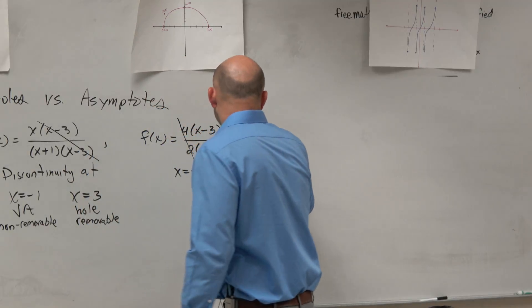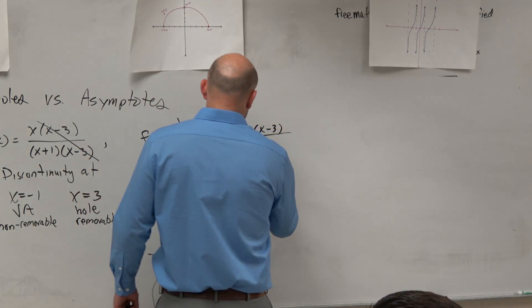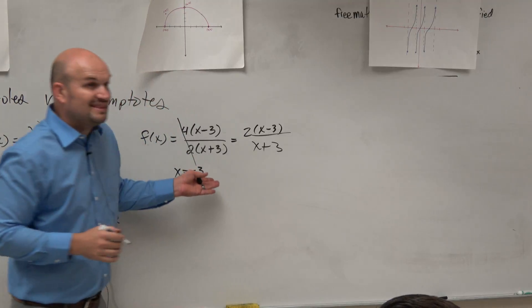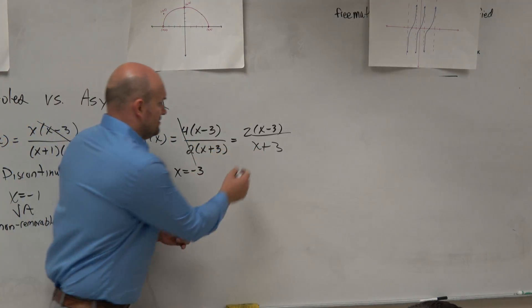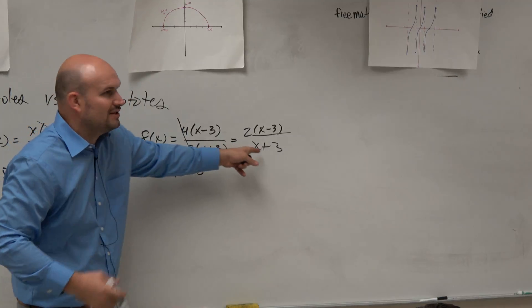So we can simplify this to 2 times x minus 3 over x plus 3. But that doesn't change. There's still, 2 is never a discontinuity anyway. So that's still good.